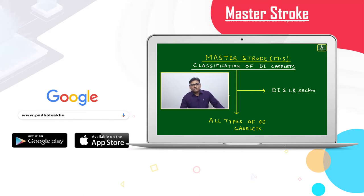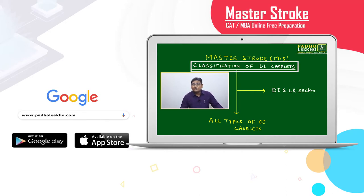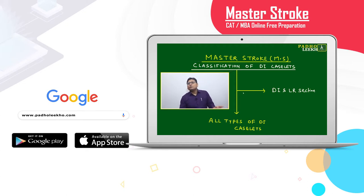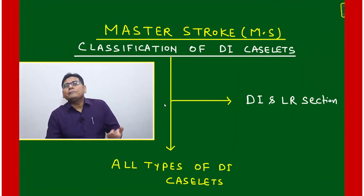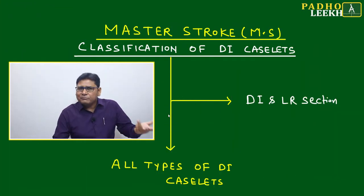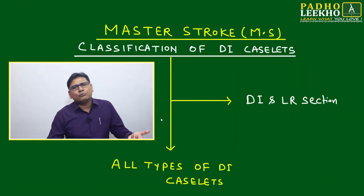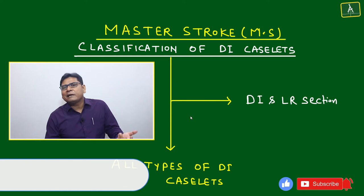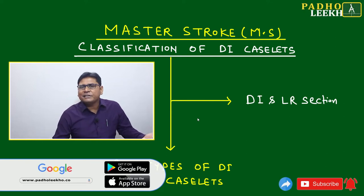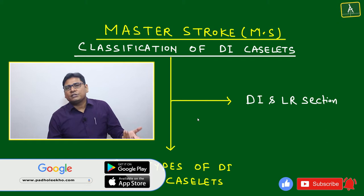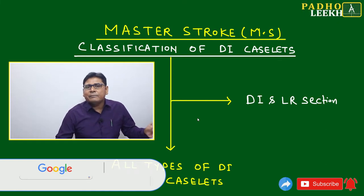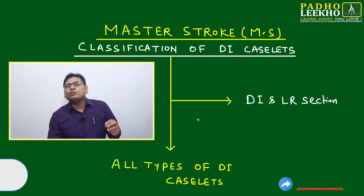Welcome to the Masterstroke session. Today we are going to discuss the classification of DI caselets. Classification is one of two key challenges that will improve your DI performance. To improve DI performance, we have to take care of three parameters: sense of data handling, time, and accuracy.